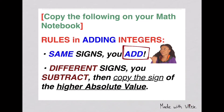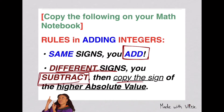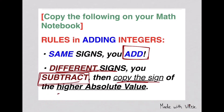Now, what about if they're different signs? One is positive, one is negative. Then you have to subtract them. Then you have to copy the sign of the one that is of higher absolute value, meaning farther from zero.